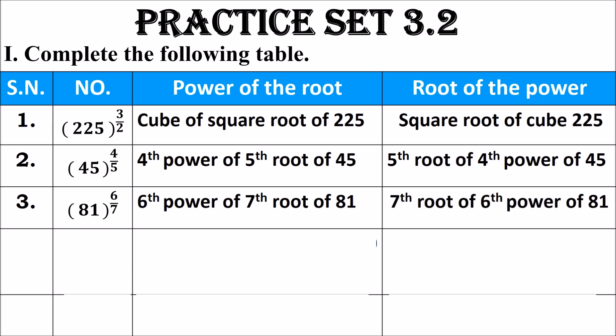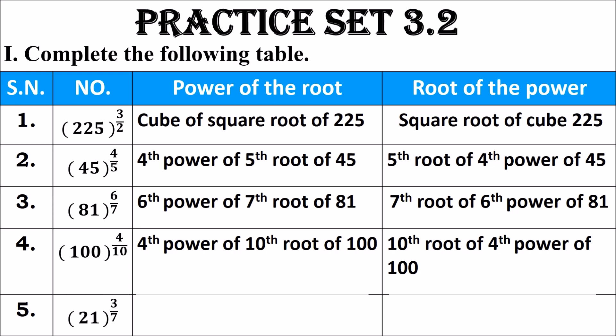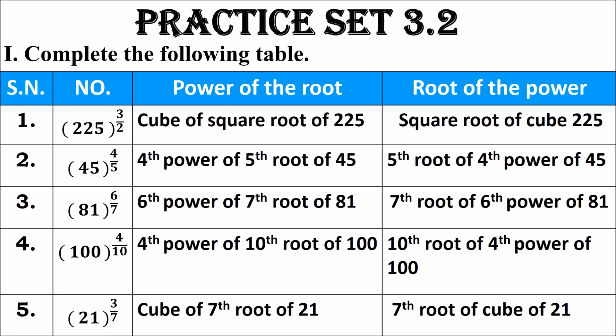Question 4: 100 raised to 4 upon 10. The numerator is 4 — fourth power; denominator is 10 — tenth root. So it is the fourth power of the tenth root of 100, which can also be written as the tenth root of the fourth power of 100. Question 5: 21 raised to 3 upon 7. The power is third (cube) and the root is seventh, so it is the cube of the seventh root of 21, which can also be written as the seventh root of the cube of 21.